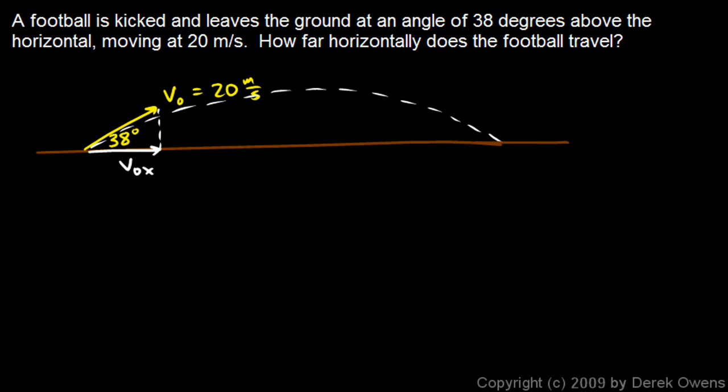We'll find V0x and V0y. V0x is the initial velocity times the cosine of the angle. V0y is the initial velocity times the sine of the angle. Make sure your calculator is in degree mode and type those in. 20 times cosine of 38 comes out to 15.8 meters per second.